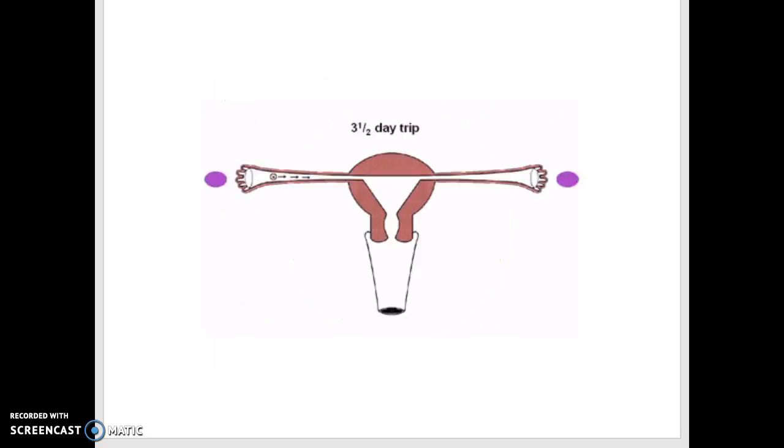After the egg has been fertilized, it becomes a single-celled zygote, and it takes three and a half days to travel through the uterine tube. As the zygote is traveling down the tube, the cells within the zygote are dividing into blastomeres. The zygote is now called a morula. By days three to four, the morula is at the entrance of the uterus.